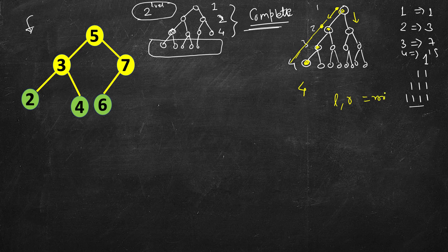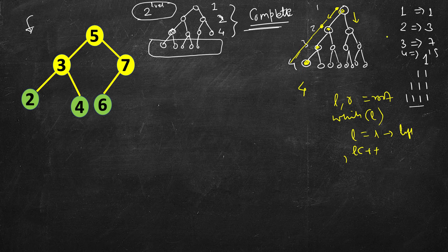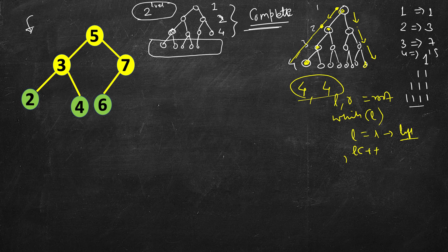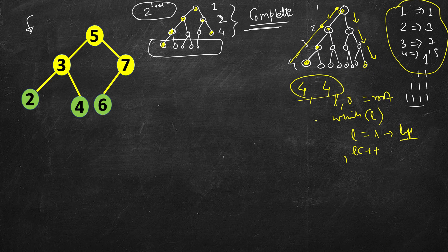While left is not null, keep going left and increment the left count. It returns four. Similarly for right, keep going right — it also returns four. If left height equals right height, since it's a complete binary tree, all last-level nodes are as left as possible. We return 2 raised to the power 4 minus 1, which is 15. But if the heights differ, we cannot apply this formula.